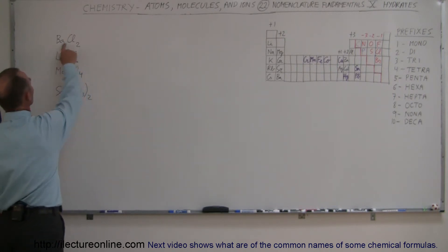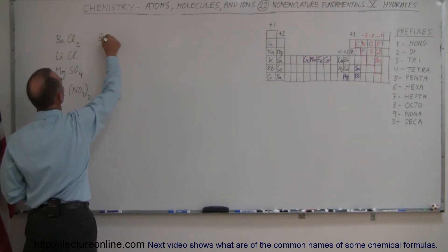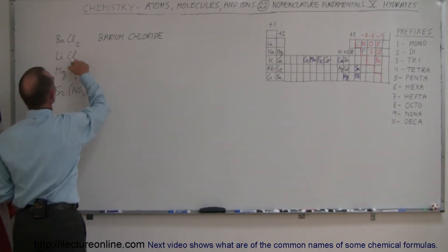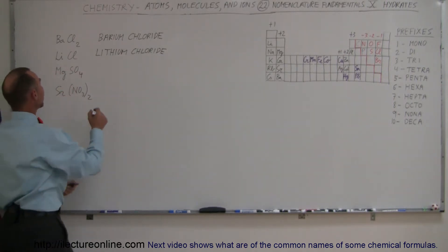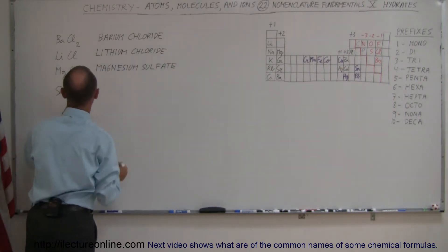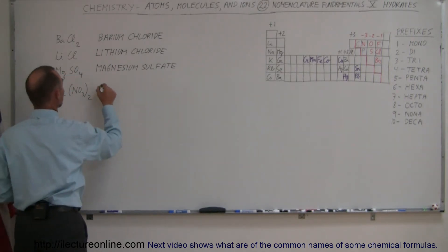We have barium and chlorine in one, so this is called barium chloride. And so this is lithium chloride. This is the sulfate ion, so we call this magnesium sulfate. And this is a nitrate ion, so we call that strontium nitrate.